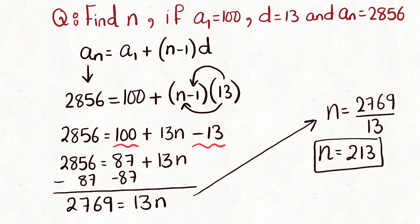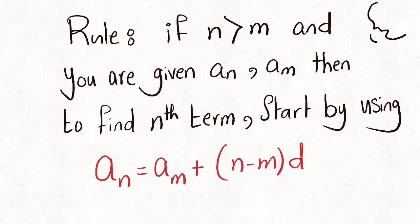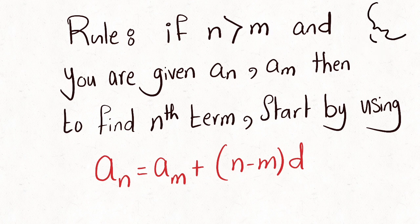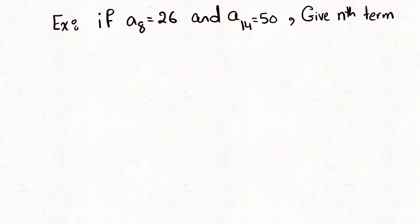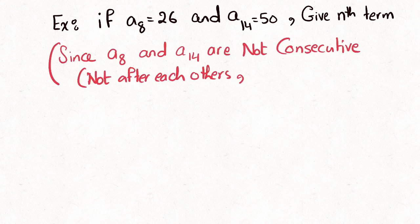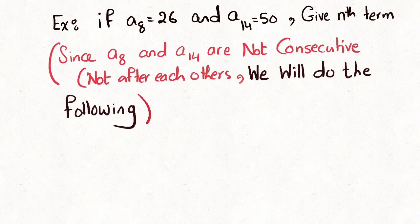Sometimes in an exam you will be given two non-consecutive terms. You assume n is the higher index and m is the smaller index, then apply the rule. For example: a8 = 26, a14 = 50. Since 8 and 14 are not consecutive, we assign n = 14 and m = 8.